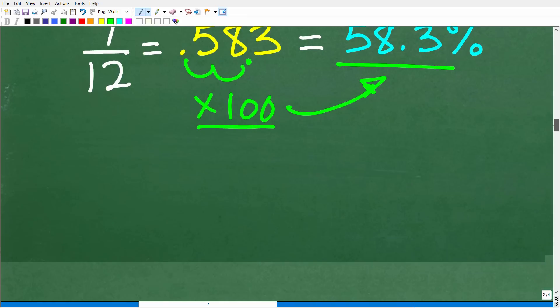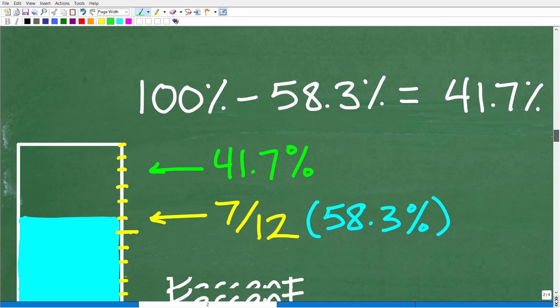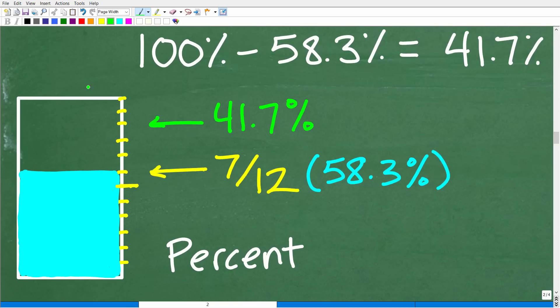So how do we change a decimal to a percent? Well, easy. All we have to do is multiply by 100 or move the decimal point over two places to the right, which is the same thing or the result of multiplying by 100. And we get 58.3%. Again, these are approximations. So this cup now, from a fraction standpoint, it is 7/12 full or 58.3% full. And now it's going to be very easy to determine what percent of the cup is empty, because if the cup was 100% full of water, well, then obviously that's 100%, but it's not 100% full. It's 58.3% full, which again is equivalent to the fraction 7/12.